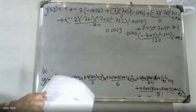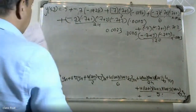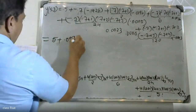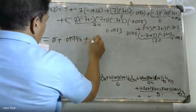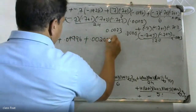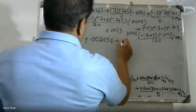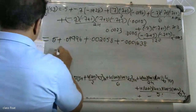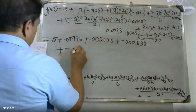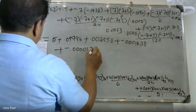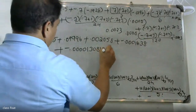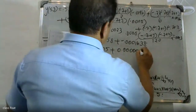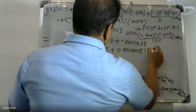After computation, the intermediate values are: 0.09996, then +0.002058, then -0.00001638, then -0.000001308, and +0.0000000105. These are added sequentially to obtain the final value.